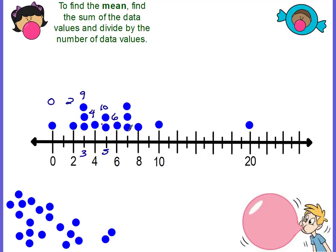There's one six. There are three sevens, so seven plus seven plus seven would be twenty-one. There's one eight, one ten. And then we have an outlier way over here, which is a twenty. So zero plus two is two, plus nine is eleven, plus four is fifteen, plus ten is twenty-five — thirty-one. Thirty-one plus twenty-one is fifty-two, plus eight is sixty, plus ten is seventy, plus twenty is ninety. So the total is ninety.